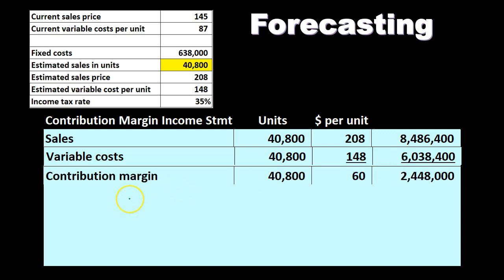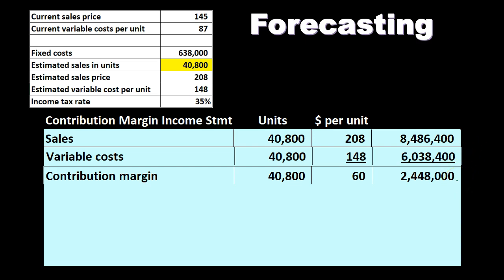Then we have the contribution margin, which we can calculate two ways. We can take 40,800 units times the contribution margin per unit — 208 minus 148 equals 60 — so 40,800 times 60 gives us 2,448,000. Or we could take total sales minus variable cost to get the same 2,448,000, which double-checks our number.